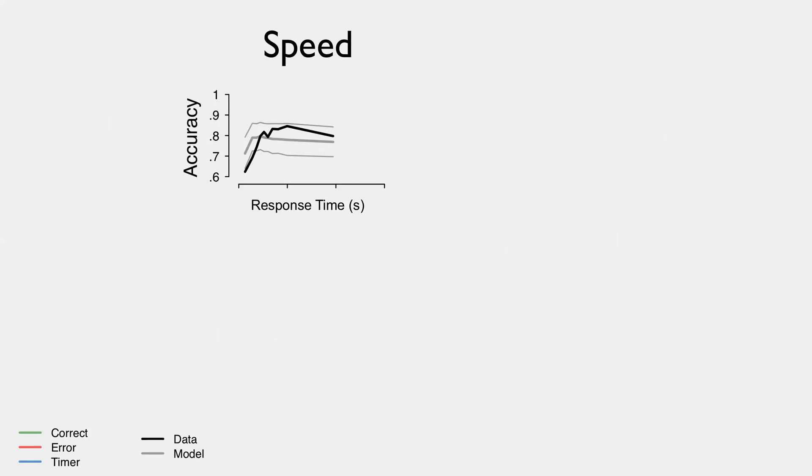So I'm not going to go through all of the goodness of fit figures, but I'm just going to pull out one here, where we're looking at the conditional accuracy function. So accuracy on the y-axis at different RTs. And the black shows data and the posterior predictives of the model in grey.